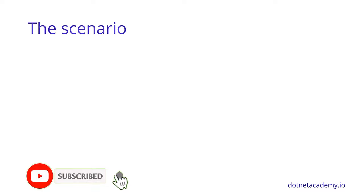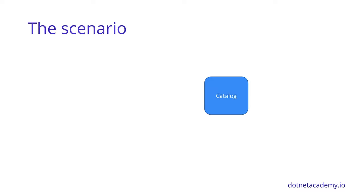Now let's talk about the scenario that we're going to be using as a domain for this tutorial. Let's imagine that we have some sort of a catalog system with a bunch of items available in it. I like to think of these items as video game items — things like potions, swords, shields, and stuff like that.